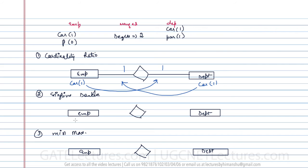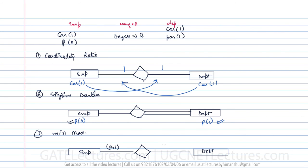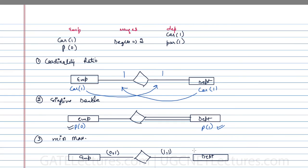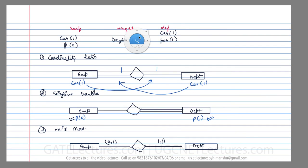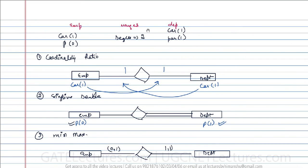For the single line double line representation, which deals with participation: the participation of employee is zero and the participation of department is one. Since department has total participation, it gets double lines; employee does not. For the min-max representation: the minimum cardinality of employee is 0 and maximum is 1; the minimum cardinality of department is 1 and maximum is 1.